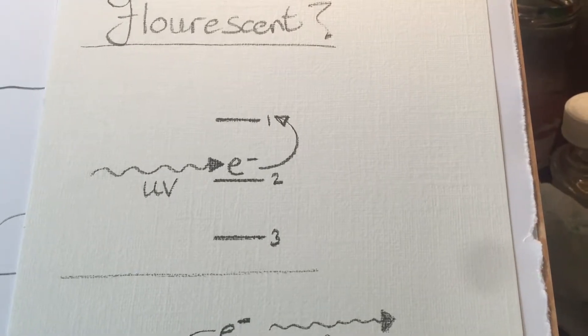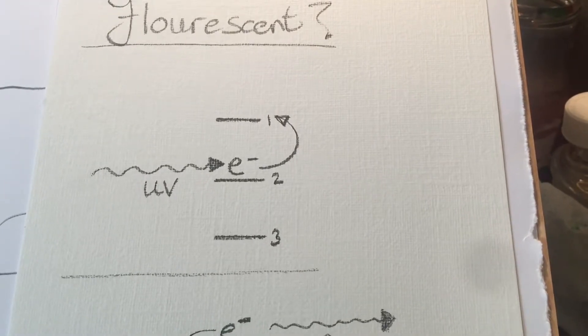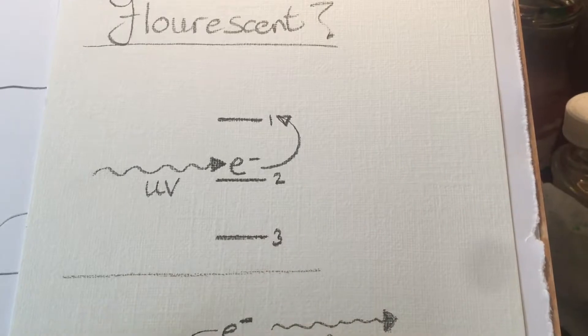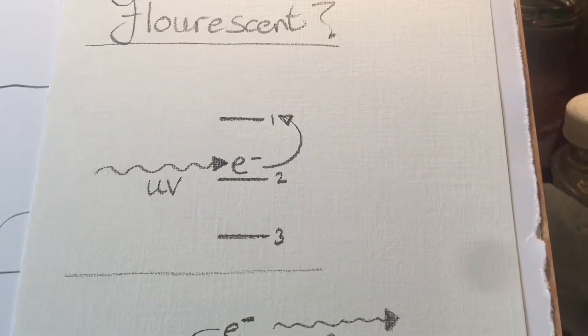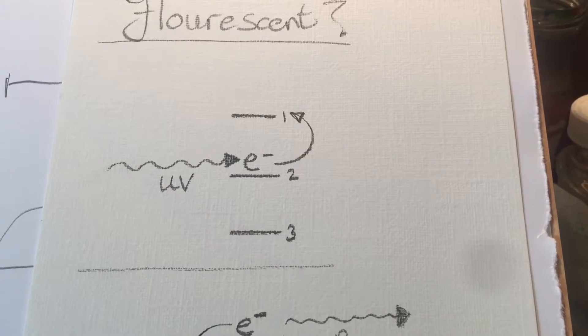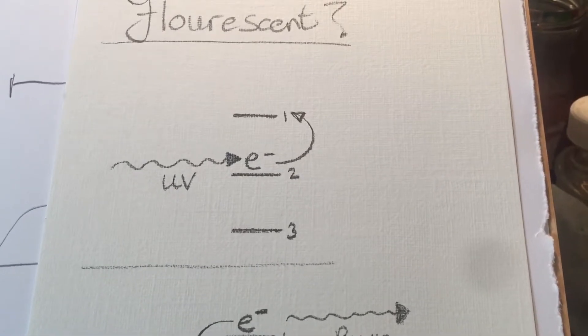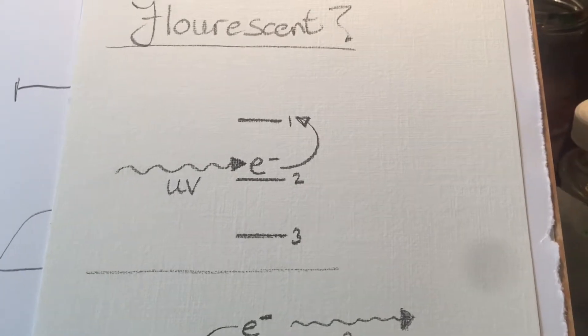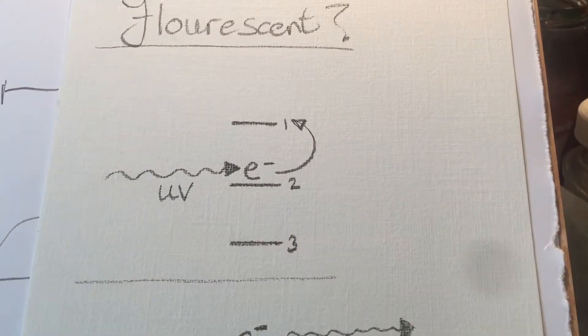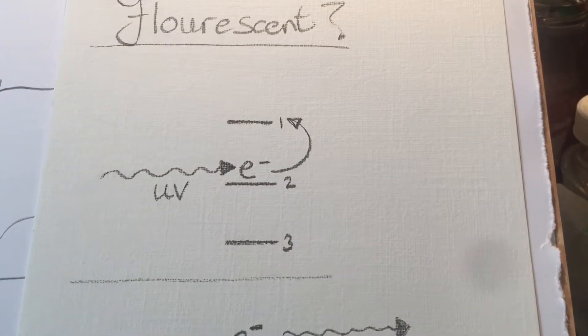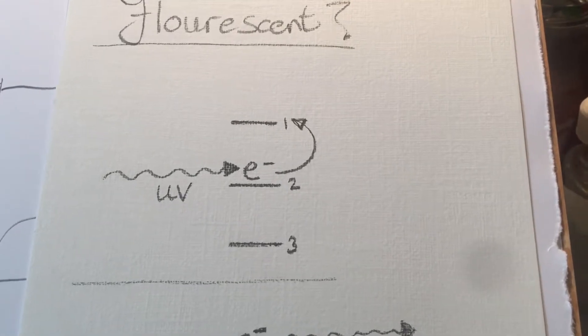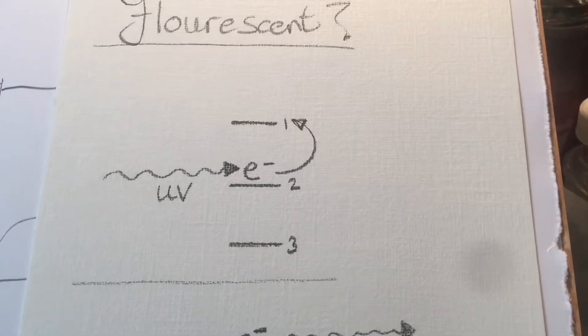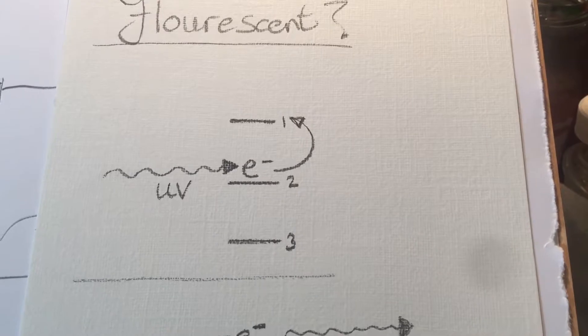Now the generic term for pigments that can emit light, actually glow if you like, is luminescent. But you might know luminous as an alternative to it, or illuminous which is actually not really a word. Fluorescent is one type, and phosphorescent is another.